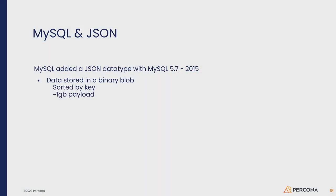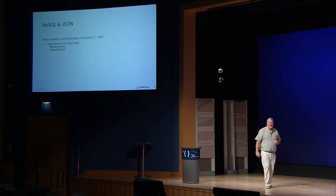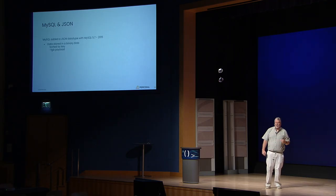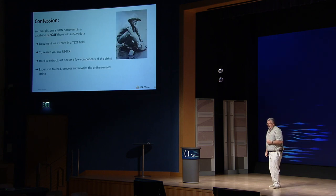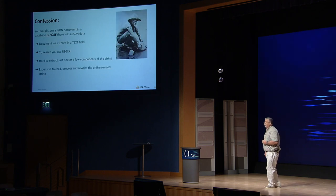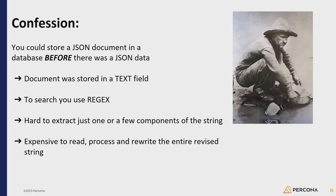JSON was added to MySQL back in 5.7, which was 2015. The data is stored as a binary blob, sorted by key, and you've got about a one-gigabyte payload. Before the JSON data type, we were storing JSON documents as a big string. It worked but it was messy — if you wanted to search things, you ended up writing very nasty regex expressions. It was very hard to extract one component, you had to read the entire string, and if you had to rewrite just one part, you had to do it all. Not very efficient.